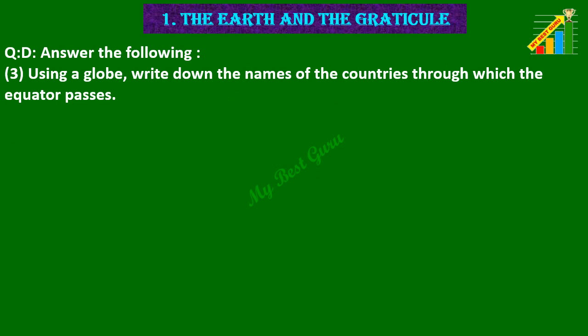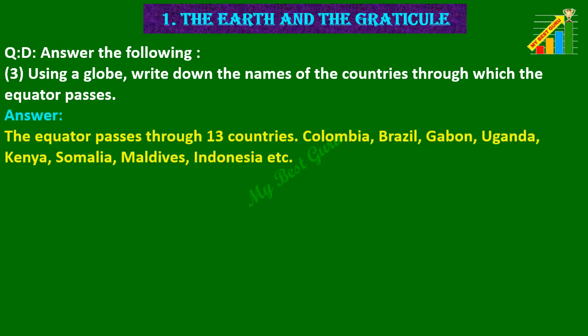3. Using a globe, write down the names of the countries through which the equator passes. Answer: The equator passes through 13 countries: Colombia, Brazil, Gabon, Uganda, Kenya, Somalia, Maldives, Indonesia, etc.